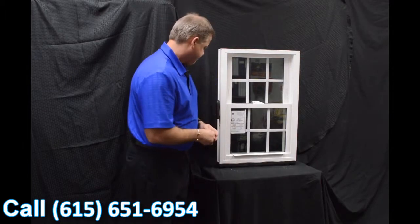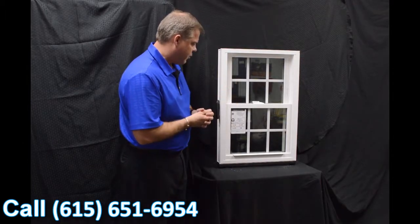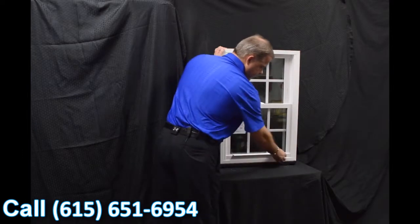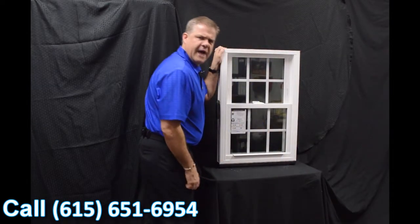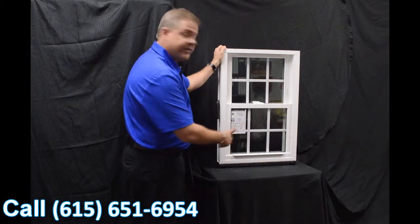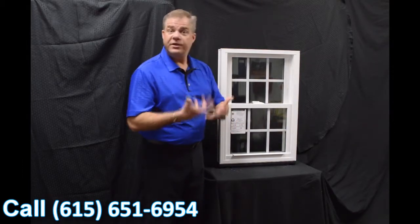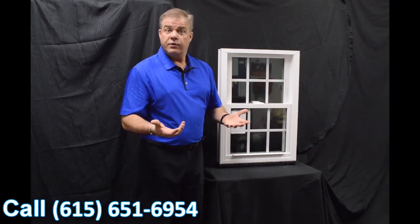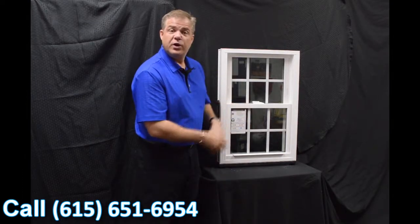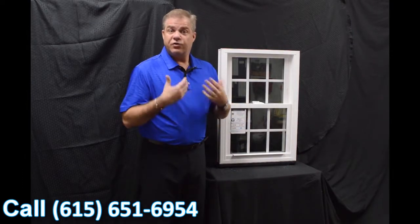One of the next features about the window is the full-length lift rails that we have that are extruded right into the sash—they're not snapped on, so there's no parts or pieces that are going to just break off from the window. Again, this makes the window extremely strong, extremely durable.